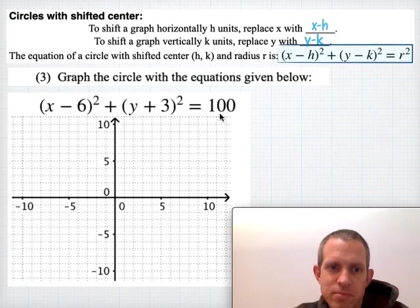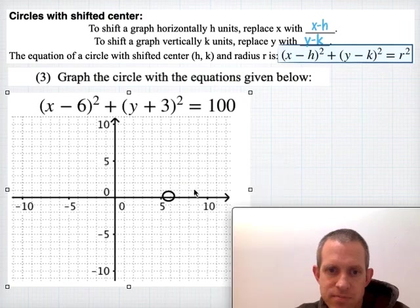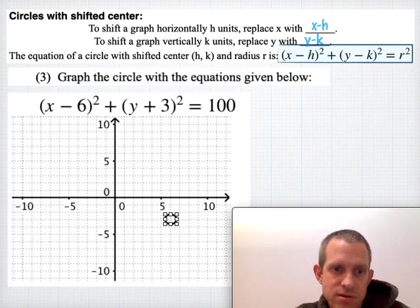One more graphing example. Hit pause if you want to see if you can find the center and the radius, and then we'll draw it in together. This circle is centered with an x-coordinate of 6 and a y-coordinate of -3, so that would be about here. The radius would be 10.